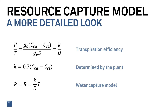Now, if we return to our water resource capture model, we see the transpiration efficiency is a constant K divided by an environmental factor — the vapor deficit of the air. When we talked about radiation use efficiency, the values were crop-specific but conservative over a growing season. Transpiration efficiencies are also conservative over growing seasons and also crop-specific. They depend on the internal CO2 concentration the leaf is able to maintain.